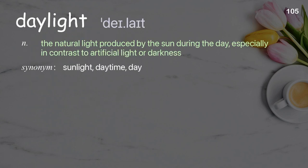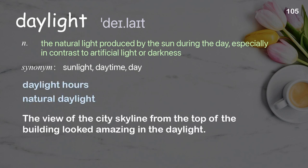Daylight: the natural light produced by the sun during the day, especially in contrast to artificial light or darkness. Examples: daylight hours, natural daylight. The view of the city skyline from the top of the building looked amazing in the daylight.